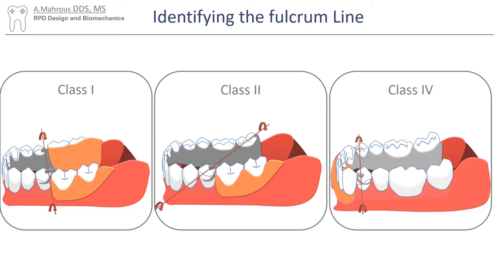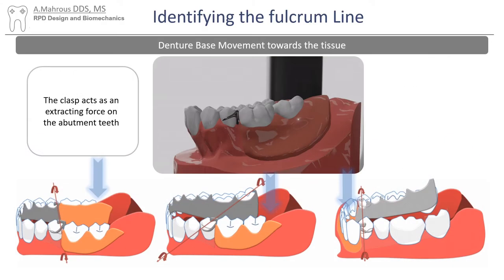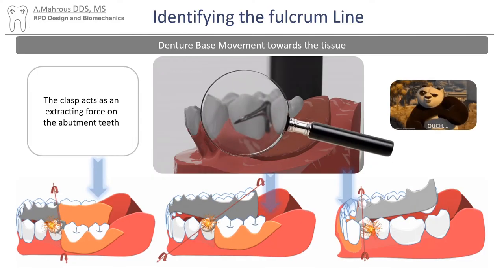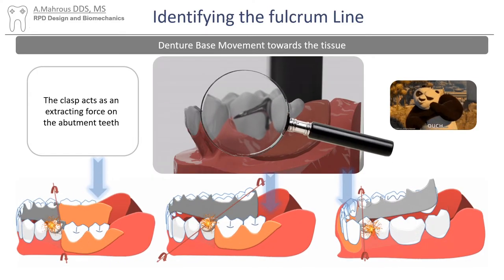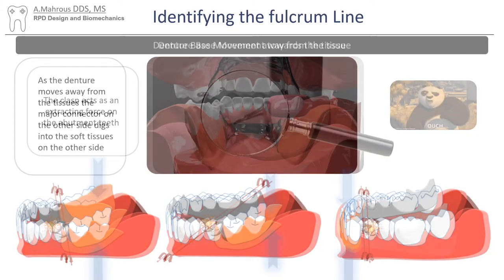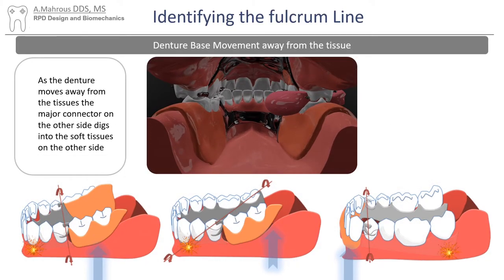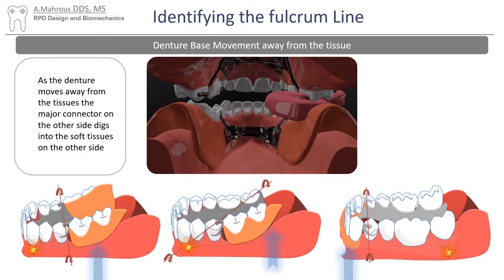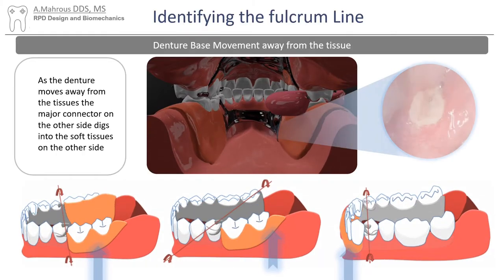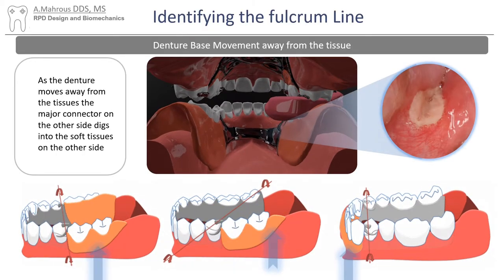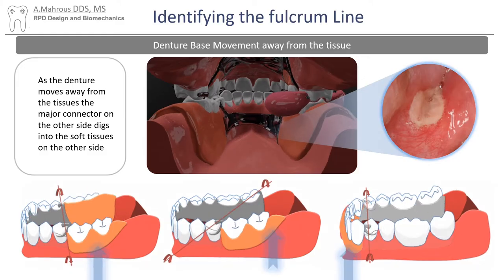Movement of the partial denture around the fulcrum line can be harmful to the patient if not managed correctly. Movement towards the tissues when the patient bites down on food can result in extraction forces being exerted on the abutment teeth by the clasps. When sticky foods pull the distal extension of the denture away from the tissues, this results in a downwards movement of the anterior portion of the framework that over time can damage the soft tissues of the patient.